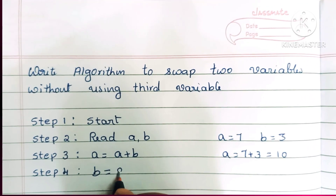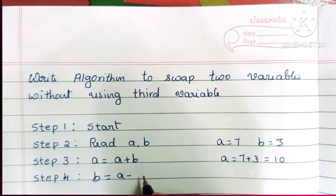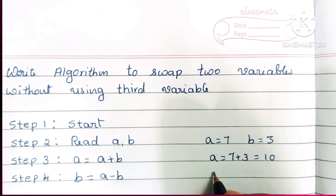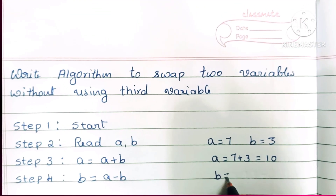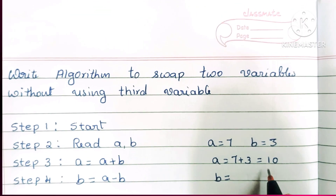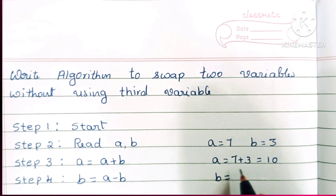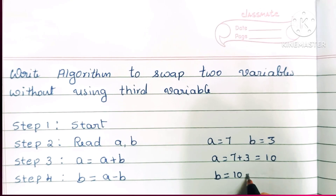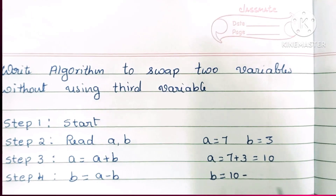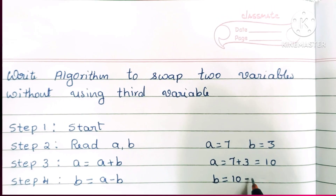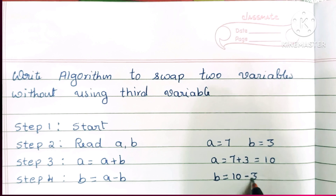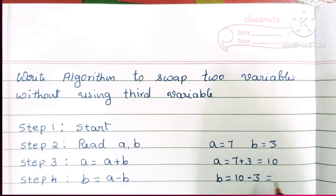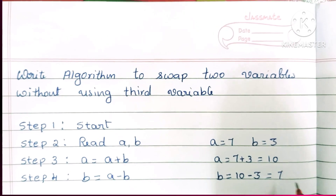In step 4, we calculate b is equal to a minus b. The current value of a is 10, and b is 3, so 10 minus 3 equals 7. So now b holds the value 7.